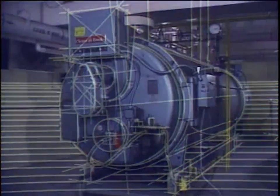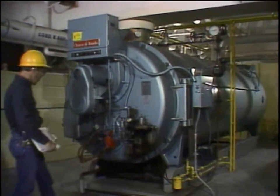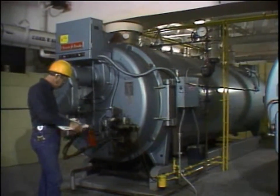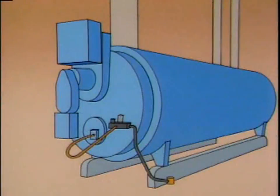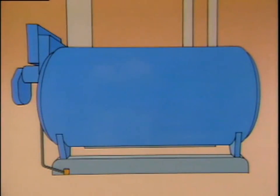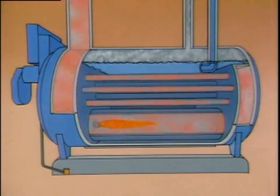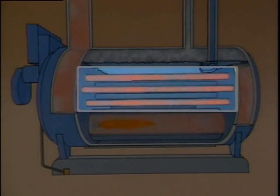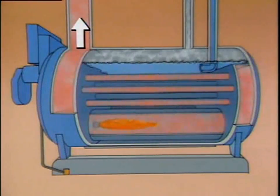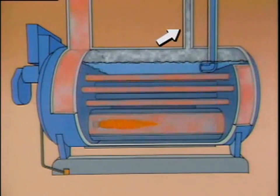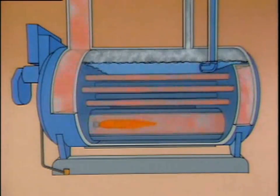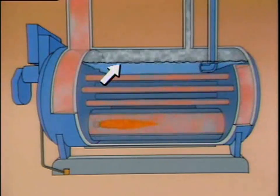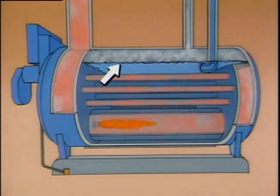Fire tube boilers route hot combustion gases through metal tubes. The tubes run through a shell filled with water. Fire tube boilers vary in design, but most operate under similar principles. The combustion area is at one end, and a group of horizontal fire tubes routes combustion gases through the boiler. There's also an outlet for the gases, a feed water line, and a steam outlet line. During operation, water enters through the feed water line, and the water level is maintained above the fire tubes to protect them from overheating.